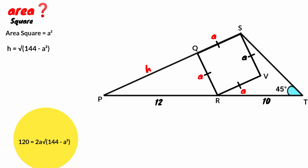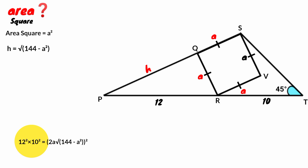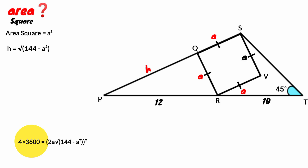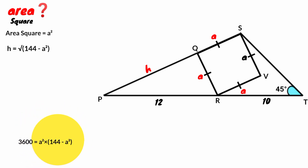We square both sides of the equation. 120 squared is 12 squared times 10 squared; 12 squared is 144 and 10 squared is 100, so 144 times 100 is 14,400. 14,400 is the same as 4 times 3,600. A squared times (144 minus A squared) is 144A squared minus A to the power of 4. So 3,600 equals 144A squared minus A to the power of 4.